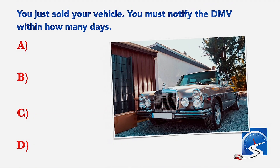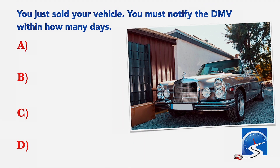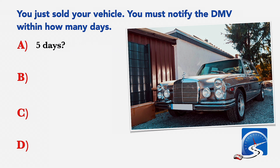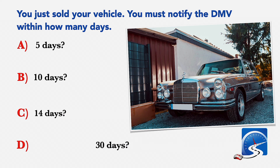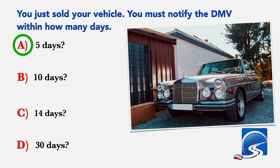You just sold your vehicle. You must notify the DMV within how many days? A: Five days. B: Ten days. C: Fourteen days. D: Thirty days. Correct answer A: Five days.